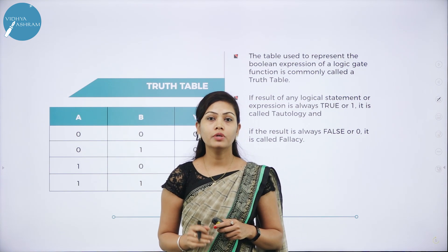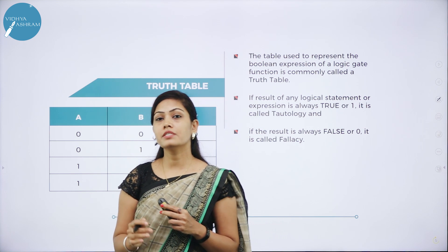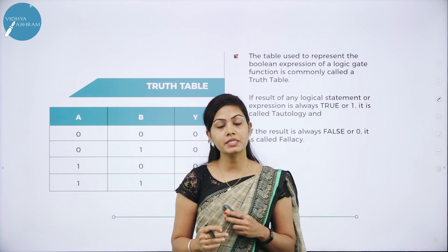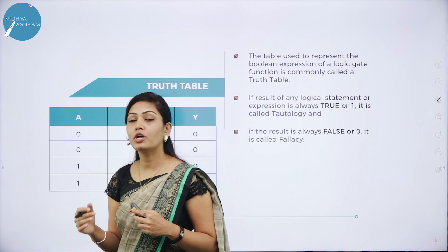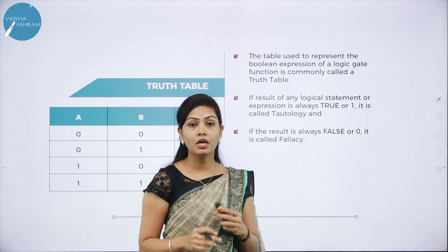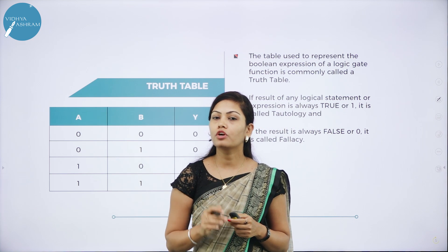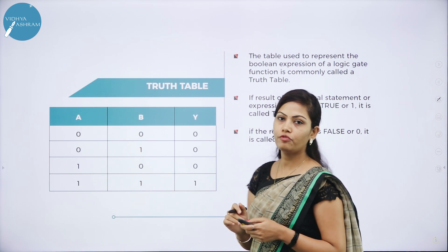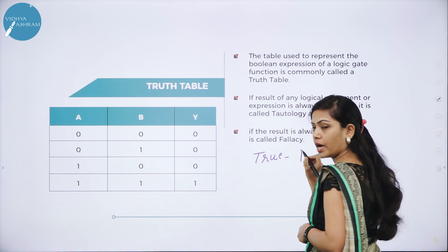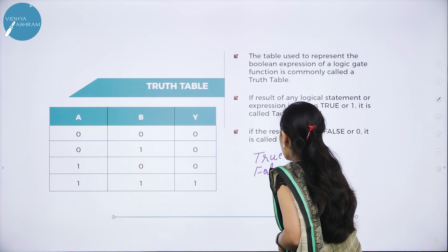Next, we have Truth Table. A Truth Table is a table which represents all the possible values or logical statements along with all the possible results for the given combinations of values. Logical statements can have only one of two values: true or false. True is represented as 1 and false is represented as 0.